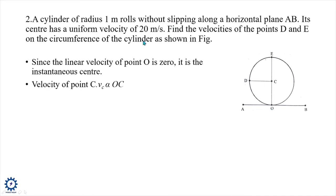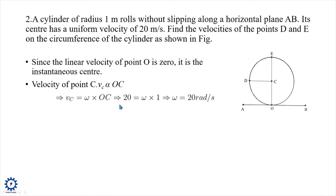We need to find ve and vd. The velocity at the center C is given: vc = 20 m/s. Since O is the Instantaneous Center, vc is proportional to OC with proportionality constant omega. So vc = omega × OC, giving omega = 20 rad/s.